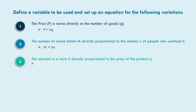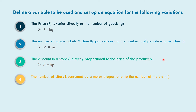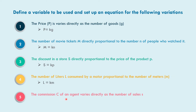In number three, the discount in a store s is directly proportional to the price of the product p. So s is equal to k times p. In number four, the number of liters l consumed by a motor is proportional to the number of meters m, so l is equal to k times m. In number five, the commission c of an agent varies directly as the number of sales s, so c is equal to k times s.